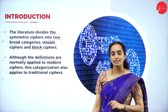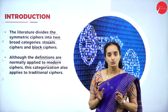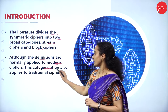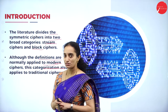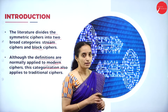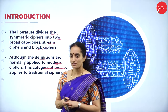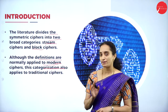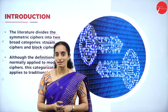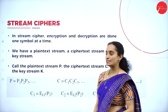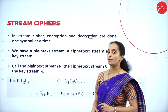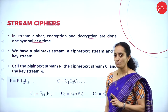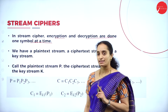These definitions apply to modern ciphers, as modern ciphers follow stream and block cipher structures. This categorization also applies to traditional ciphers, which are all the ciphers we have studied so far. These traditional ciphers can also be categorized into stream and block ciphers. In stream ciphers, encryption and decryption are done using one symbol at a time.